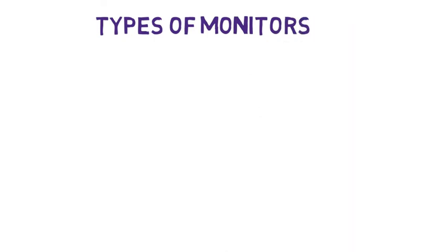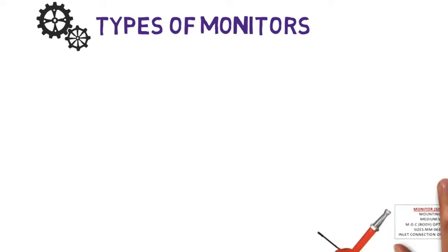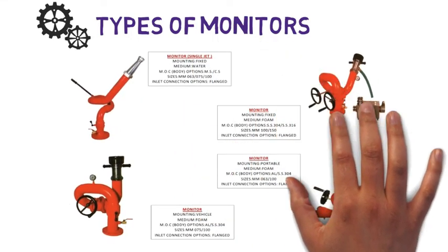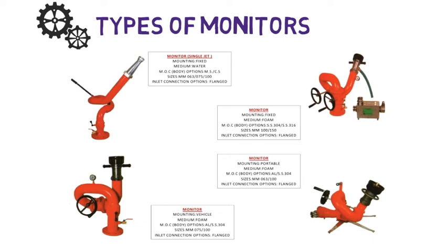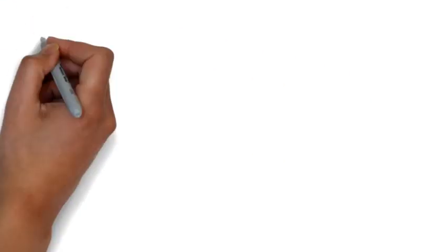See the images of different types of fire monitors. First, the single-jet fire monitor — you can mount this monitor in a fixed position and water is used as the medium. Second, a fixed monitor where the medium is foam. Third, a portable monitor where the medium is also foam. Fourth, a vehicle-mounted monitor where foam is used as the medium.